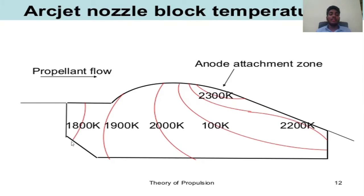Temperature zones: 1800 degrees Kelvin at the anode attachment zone, 1800 K, 2000 K, 1000 K, 2000 K.